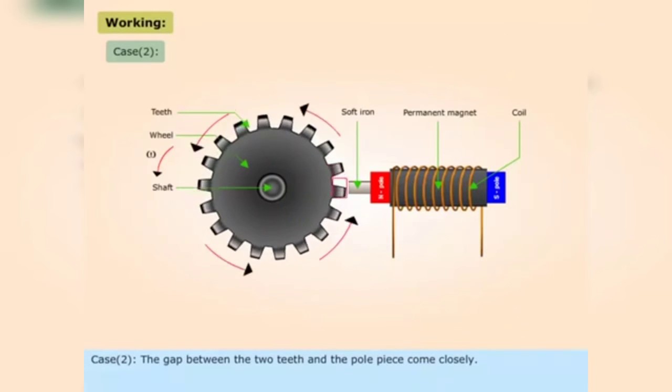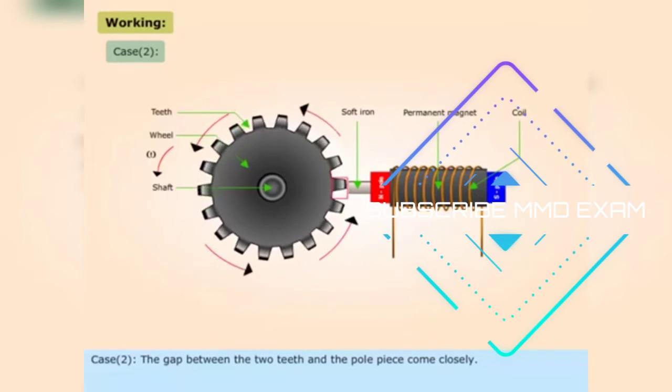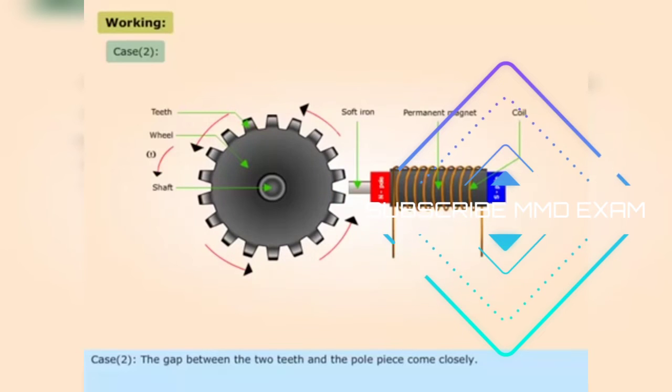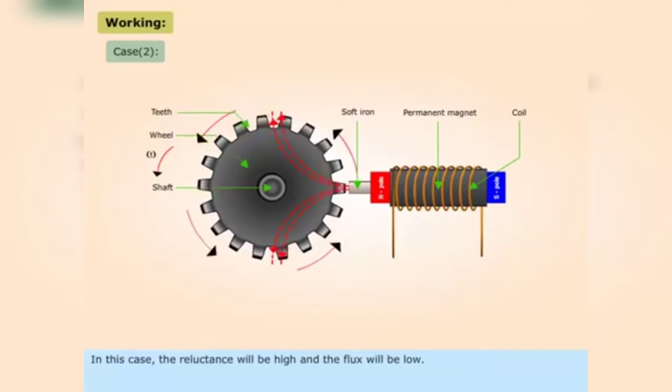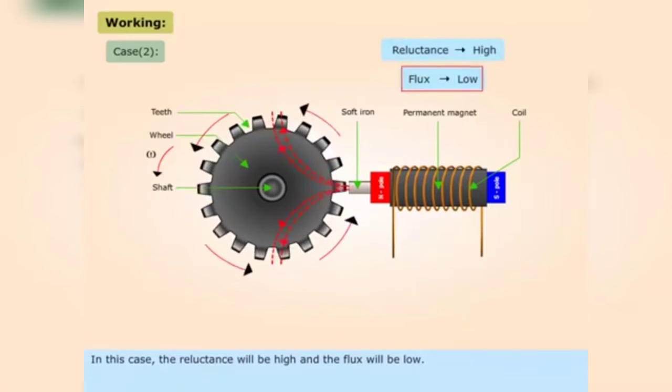Case 2: The gap between the teeth and the pole piece increases. In this case, the reluctance will be high and the flux will be low.